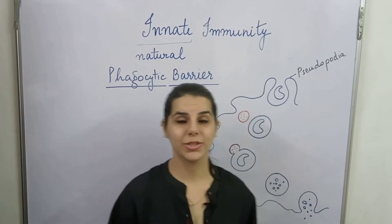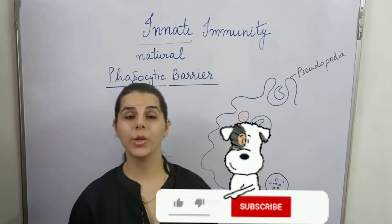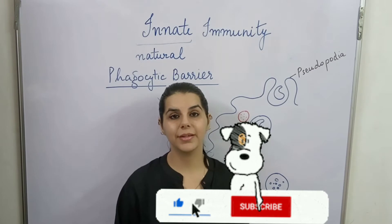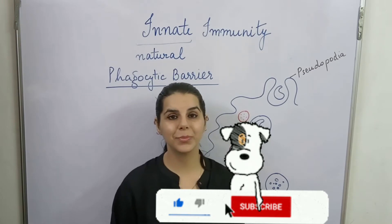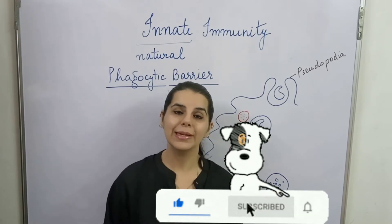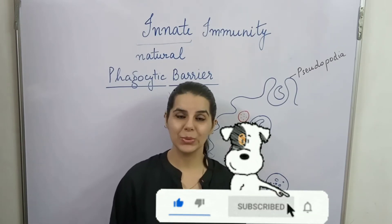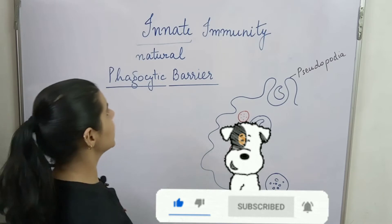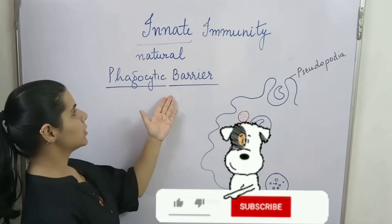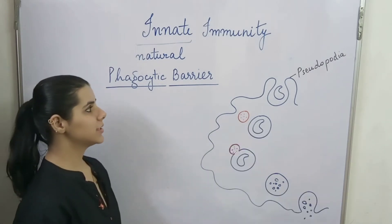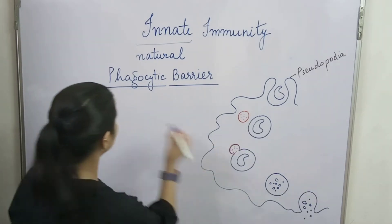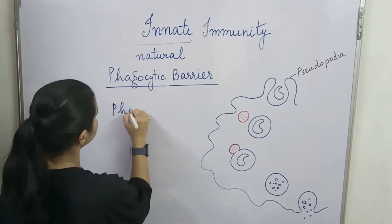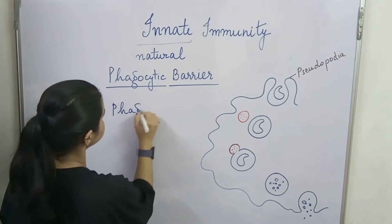Hi guys, this is Dr. Shuchitra Barba and today I am going to discuss the third barrier, that is the phagocytic barrier in the innate immune system. So now we are going to talk about the phagocytic barrier, and this involves the process known as phagocytosis.